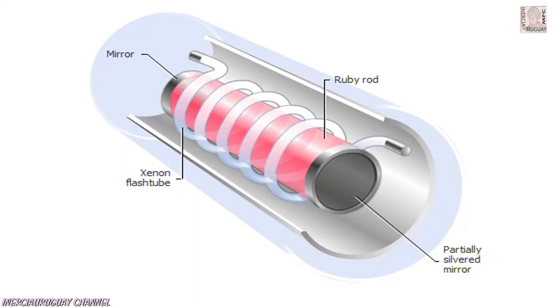The first laser was made of a ruby rod, mirrors, and a xenon flash tube.